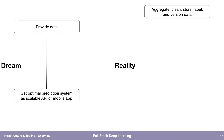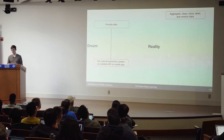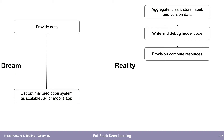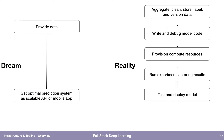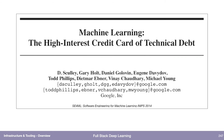But in reality, what we have to do is: find the data, aggregate it, clean the noisy stuff, store it, pay money to label it, version it, then write our model code, probably debug it for many days or weeks, provision compute resources, run experiments, store results, test the model, deploy the model — and we're not even done then. We have to monitor predictions and close the data flywheel loop through user interface work. So the dream and the reality are not quite aligned right now.